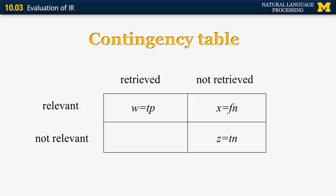In the other diagonal, X equals the false negatives — documents that were not retrieved by the system but were supposed to be retrieved, so they're misses. Similarly, Y is the number of false positives: documents that were not supposed to be retrieved, but the system returned incorrectly. N2 is W plus Y, the total number of retrieved documents. N1 is W plus X, the number of relevant documents. And N is W plus X plus Y plus Z, the number of all documents in the collection.